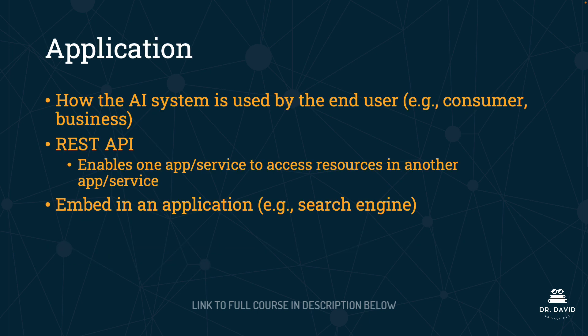An application is how the AI system is used by the end user. The end user can be someone using ChatGPT to help them write a haiku, for example. It could also be a business leveraging an AI system to make their processes more efficient or to automate them. There are two major ways that consumers and businesses interact with the application — either through a REST API or through an application in which the AI is embedded, for example a search engine. Google now has a search engine that will provide AI overviews, where you can ask a question and get an AI overview aggregating a number of different responses.